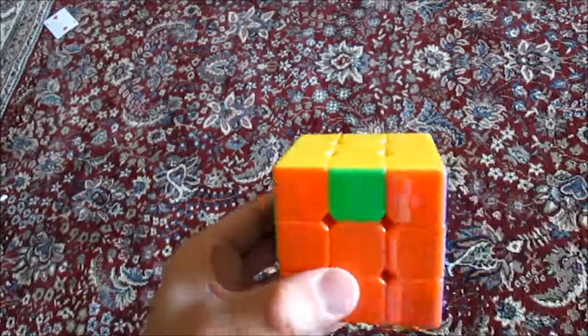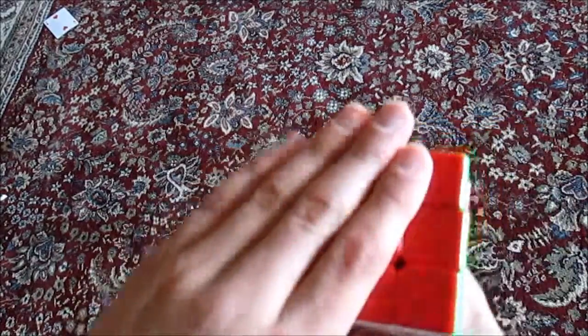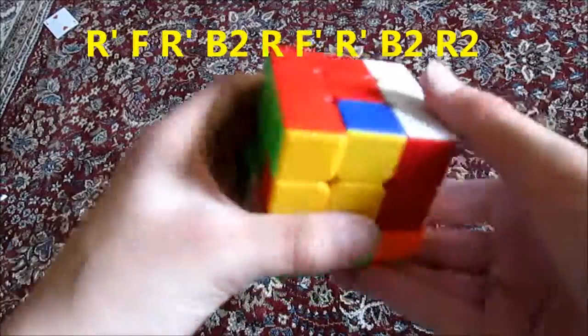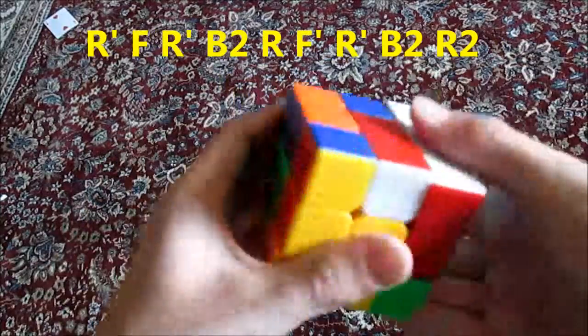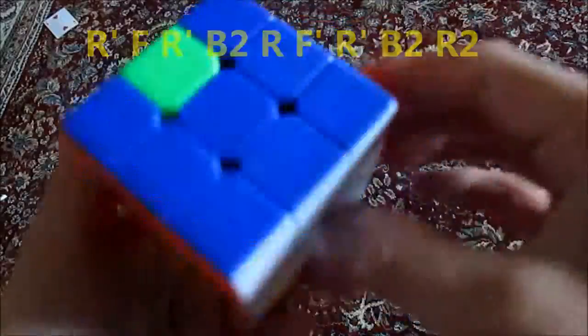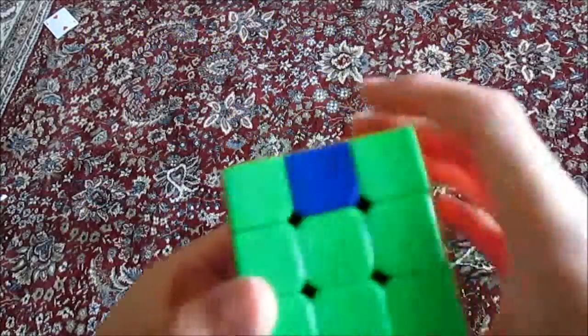All right guys, so this is the case you most commonly have when you just have headlights here. So you're going to put the headlights on just like this so they match. And then flip this to the back, the headlights. And then you do the same algorithm: R', front R', back 2, Right Front, Back 2, Right 2.